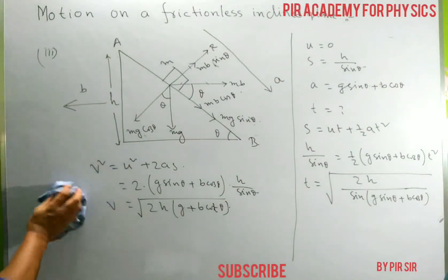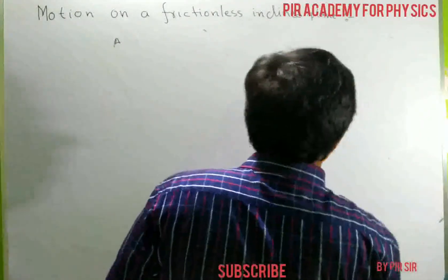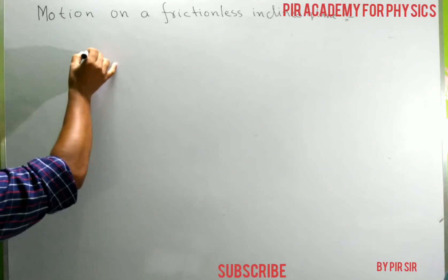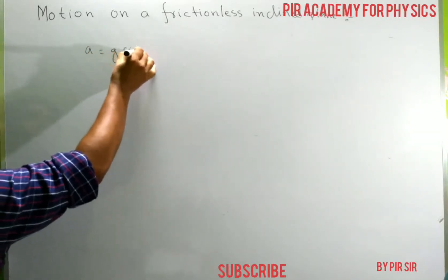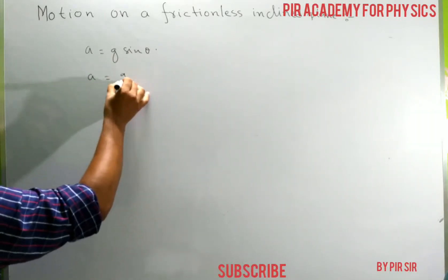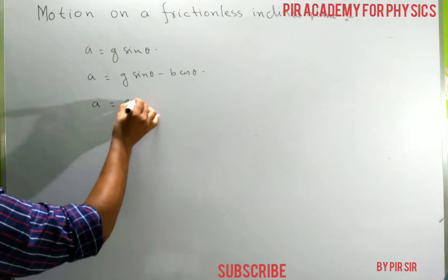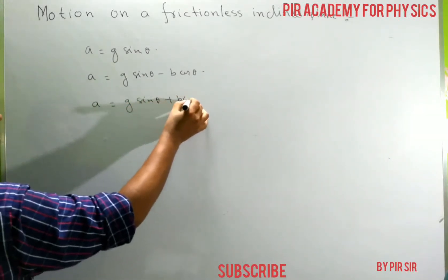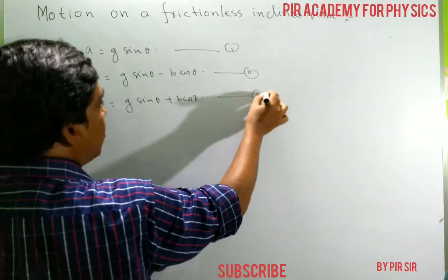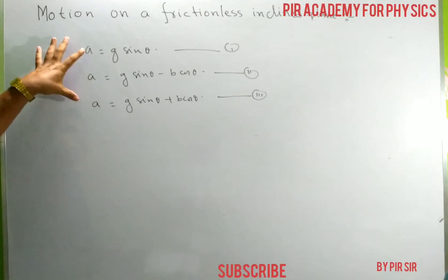Summary of the three cases — only the acceleration changes between them: Case 1: A equals g sin theta. Case 2: A equals g sin theta minus B cos theta. Case 3: A equals g sin theta plus B cos theta. Once you have the acceleration, you can calculate all other quantities — time and velocity — using the one-dimensional equations.